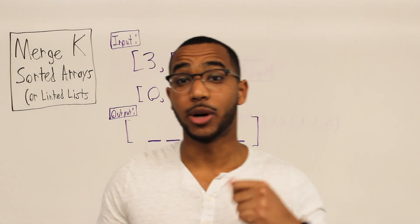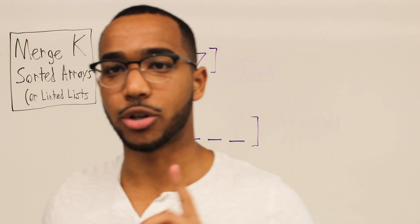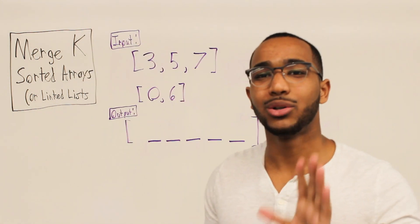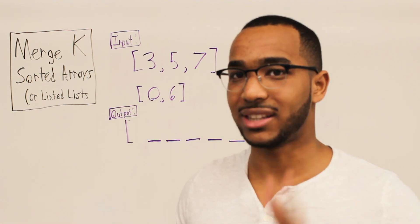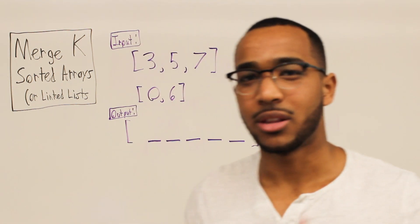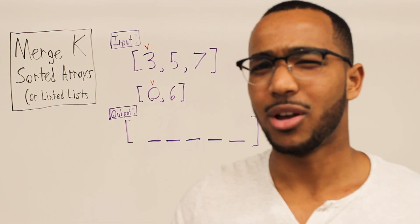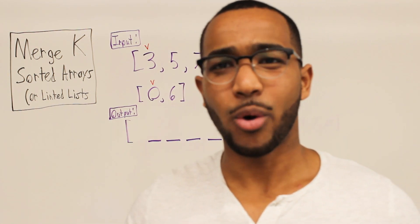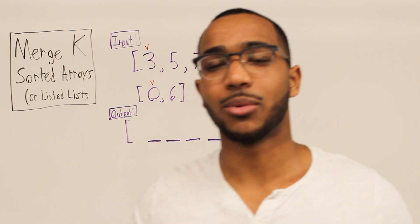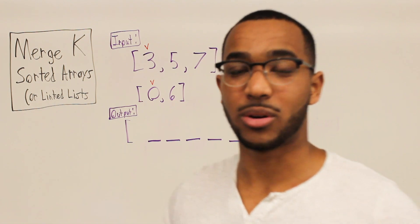Do we know how to merge two sorted lists? If you're familiar with the merge sort algorithm, this is something you should be able to do. What is of best interest to us? We create a pointer on the smallest item. Notice how we only care about the smallest item in each array — that's for a reason. And we're going to see how that generalizes to solve the k sorted array problem.